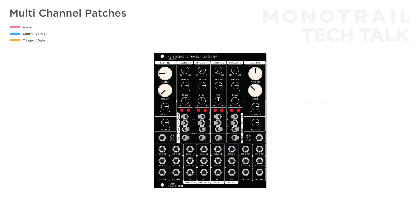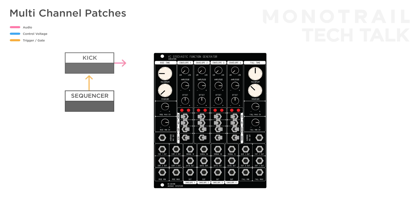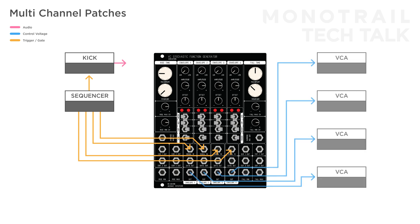A nice percussive setup is to use a sequencer to create multiple trigger patterns. One is triggering a four-to-the-floor kick, and four other patterns are used to trigger envelopes on the ADAC506. Those envelopes are sent to VCAs shaping the volume of other percussive sounds passing through them — like noise through a high pass filter, a tuned wavetable oscillator, and a bass sound.